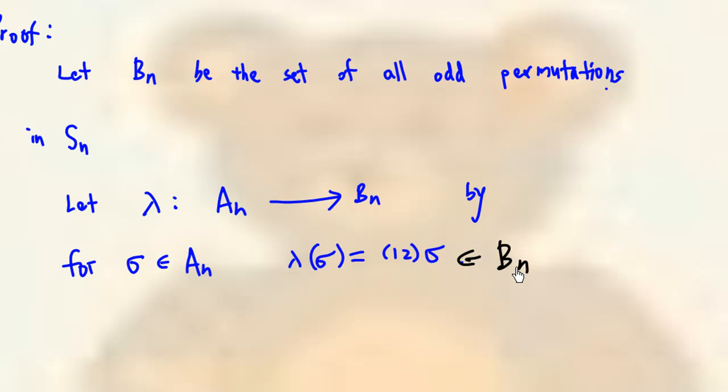So, together with (1 2) times sigma in front, (1 2) times sigma will be in B sub n. That is, (1 2) times sigma is an odd permutation.